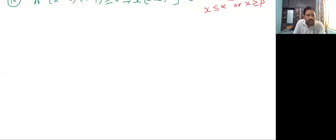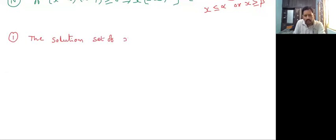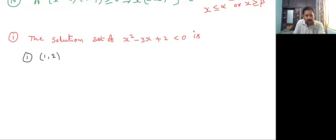First question: the solution set of x squared minus 3x plus 2 less than zero. They are given options: first option, open interval (1, 2); second option, closed interval [1, 2]; third option, (minus infinite, minus one) union...